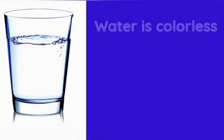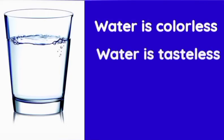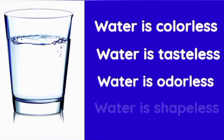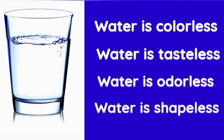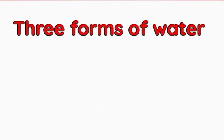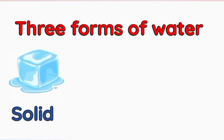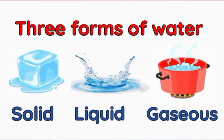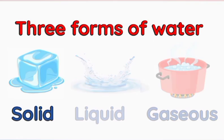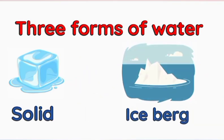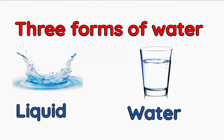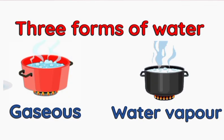Water is colorless, tasteless, odorless, and shapeless — it has no color, taste, odor, or shape. There are three forms of water: solid, liquid, and gaseous. An iceberg is an example of the solid form of water. Water itself is an example of the liquid form, and water vapor is an example of the gaseous form of water.